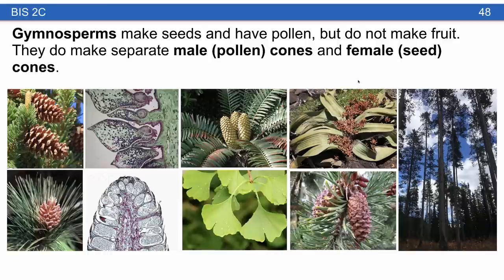Gymnosperms make seeds and have pollen, but they do not make fruit because they lack ovaries. They do have separate male and female cones. Male cones are the soft, squishy pollen cones. Female cones tend to be larger and woody. Inside, the female cone has a megasporangium associated with each scale, and the male cone has microsporangia filled with microspores that develop into pollen grains.